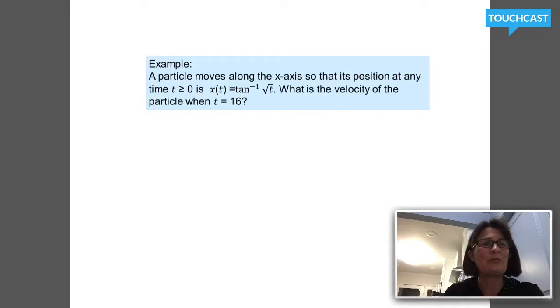Here we have a next example. I have a particle that's moving and its position is inverse tangent of square root of t. How can I find the velocity of the particle when time is 16? Well, I know velocity is related to position with this relationship. Velocity is the derivative of position.